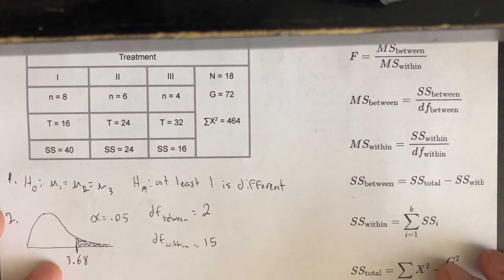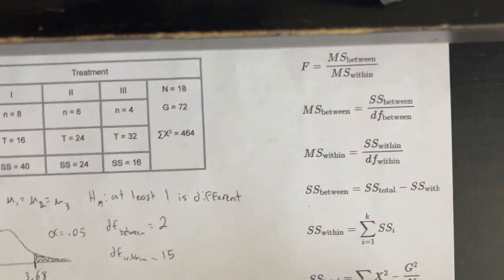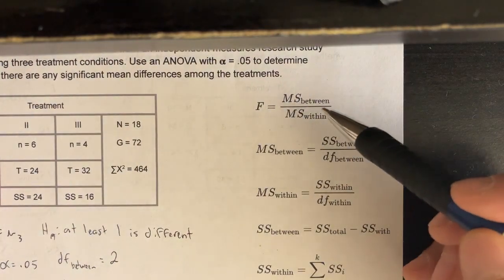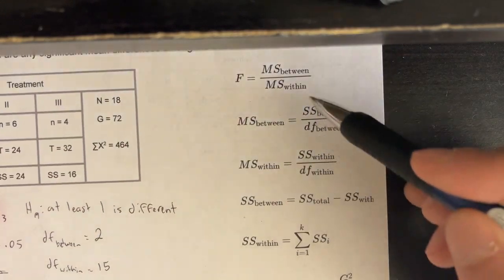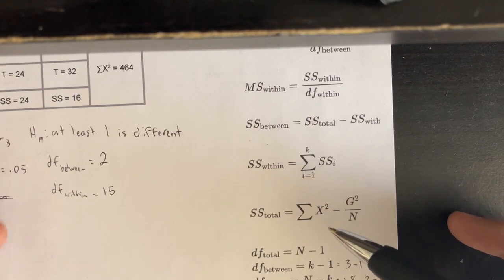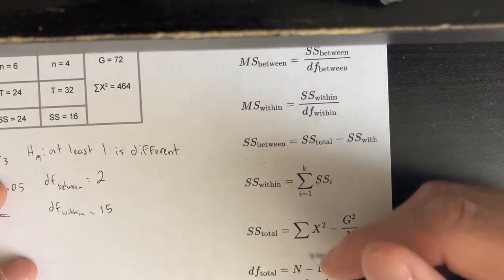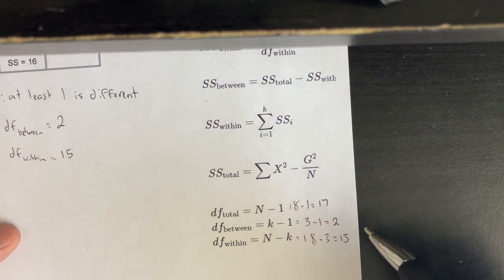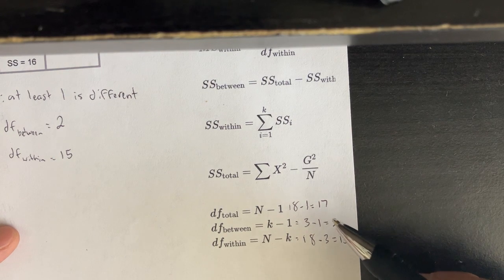Now we can start the calculations. We work from the bottom up, filling in the missing components. We already have the degrees of freedom. The total degrees of freedom, which we don't strictly need, is 18 minus 1 equals 17 — and you can verify that df between plus df within equals 17, confirming 2 plus 15 is 17.